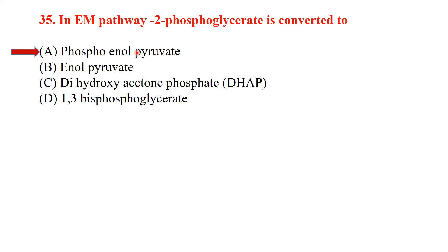In the Embden-Meyerhof pathway, 2-phosphoglycerate is converted into phosphoenolpyruvate — this is a step of glycolysis.